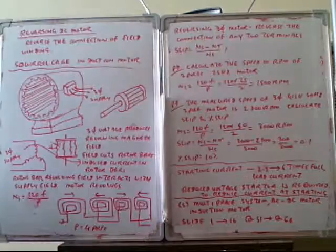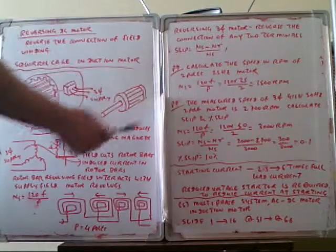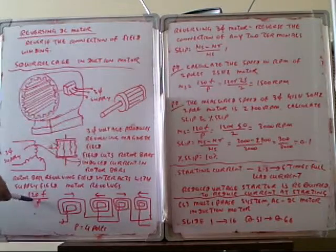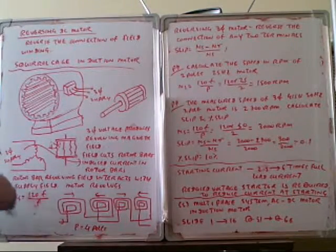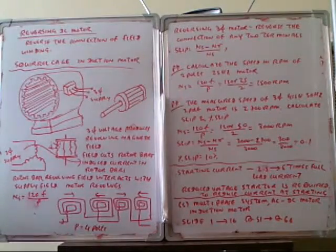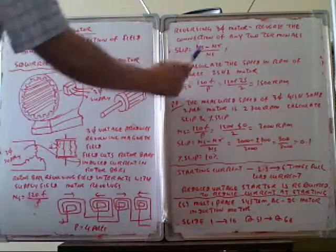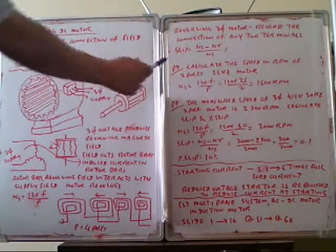You can start reversing the direction of rotation of the three-phase induction motor. The slip can be calculated. Ns is the synchronous speed, the formula speed, f is the frequency. The motor speed is ns and nr is the actual rotation speed. The slip is equal to ns minus nr divided by ns.